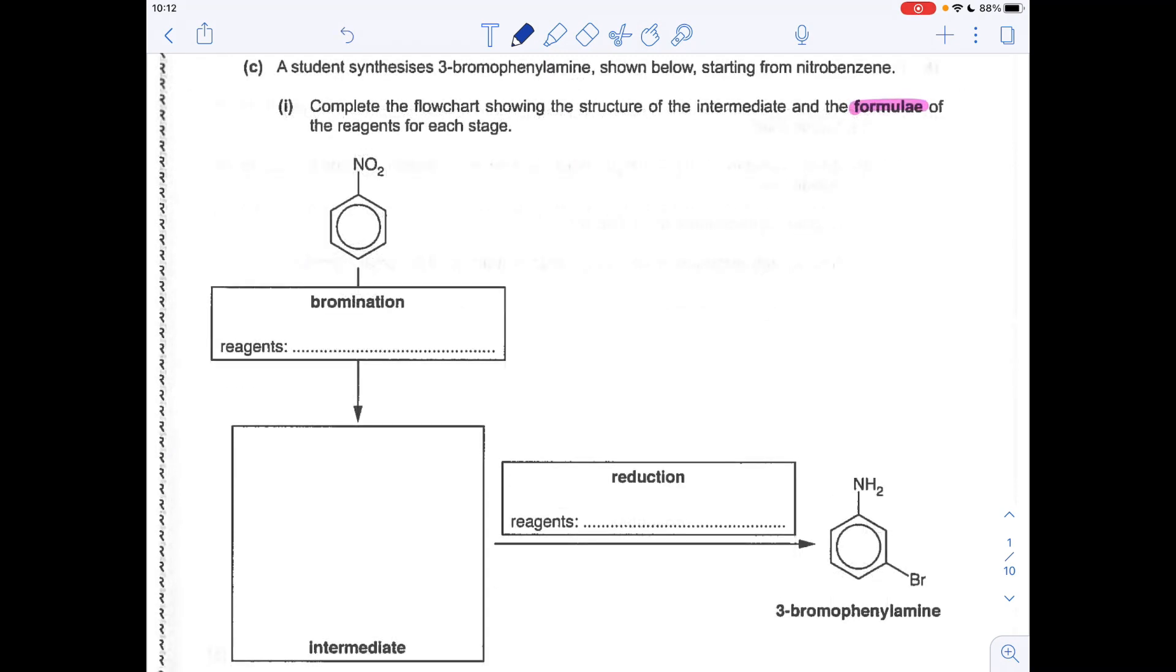We've got to show the structure of the intermediate and the formula of the reagents for each stage. So obviously, if you want to brominate this nitrobenzene, you need to react it with Br2, but you also need a catalyst. So you could either go for FeBr3, or you could go for AlBr3.